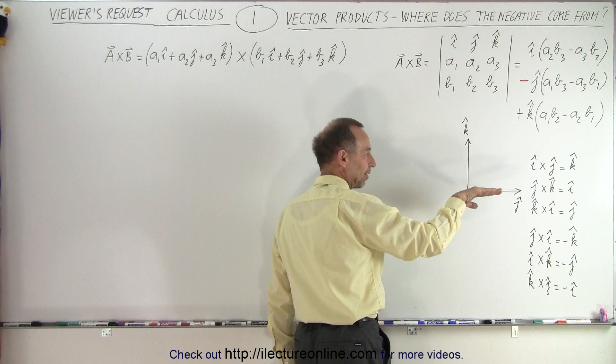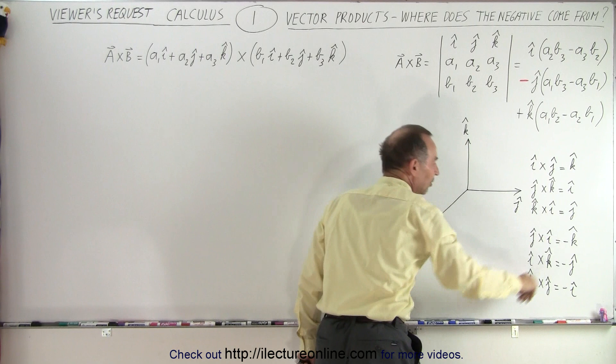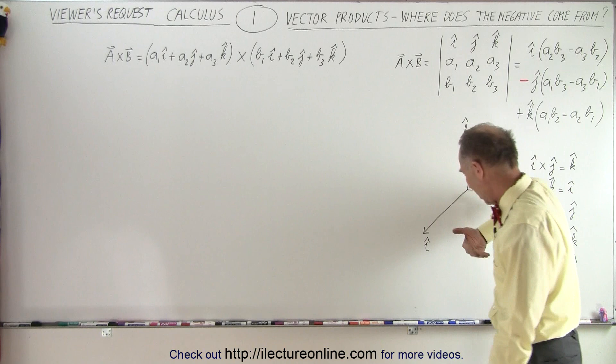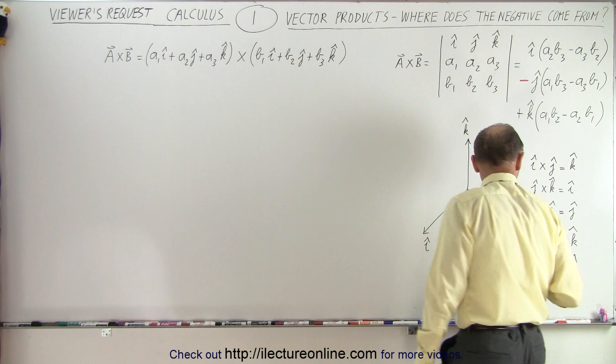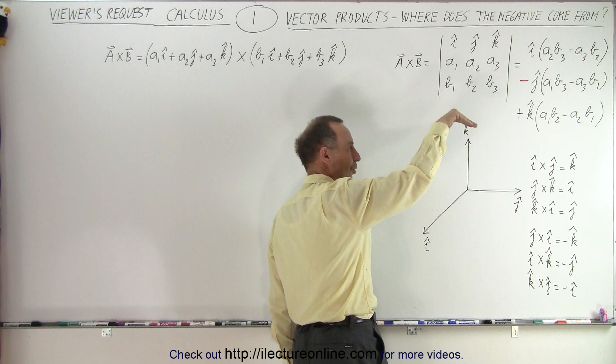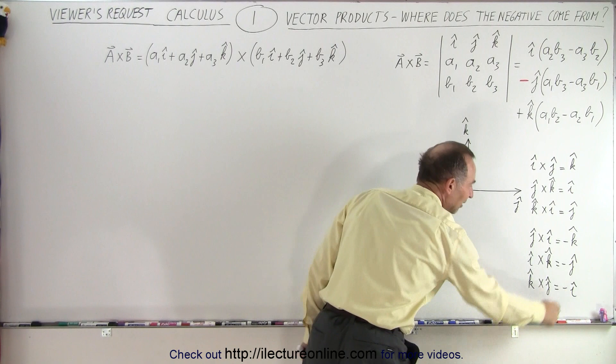But when you reverse the cross product: J×I — point your fingers in the direction of J, curl toward I, and your thumb points downward into the negative K direction. Similarly, I×K gives negative J, and K×J gives negative I.